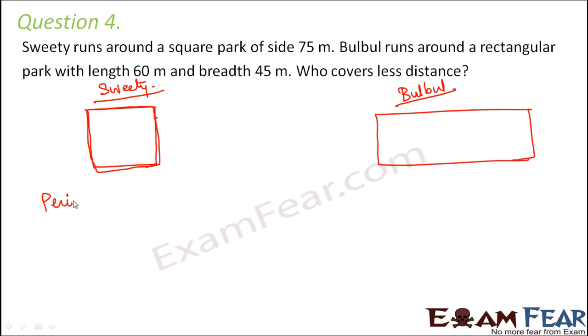So we will have to find out the perimeter of the square. So for the square, perimeter is 4 into length of each side. So what is the length of each side? It is 75. So 4 into 75 that is equal to 300 meters.